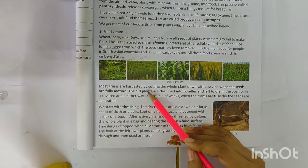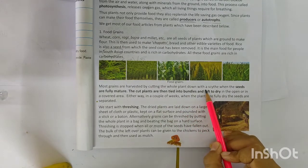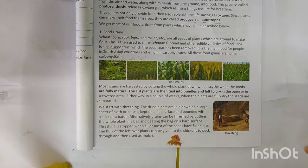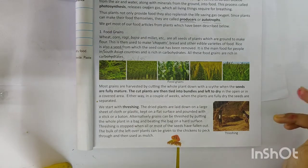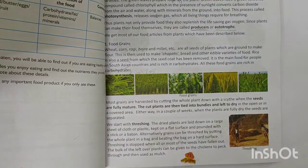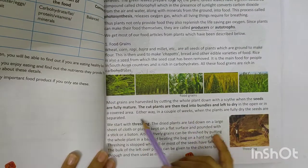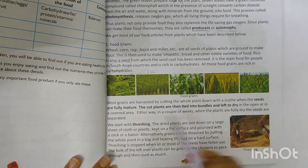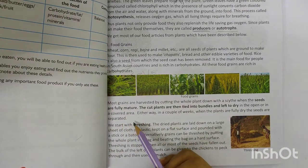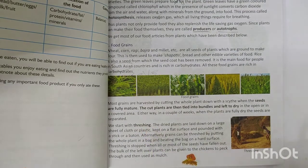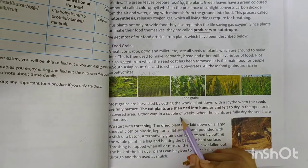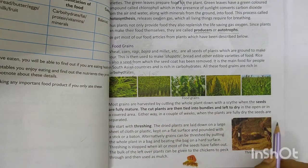Most grains are harvested by cutting the whole plant down with a scythe when the seeds are fully mature. The cut plants are then tied into bundles and left to dry in the open or in a covered area. After a couple of weeks, when the plants are fully dry, the seeds are separated.